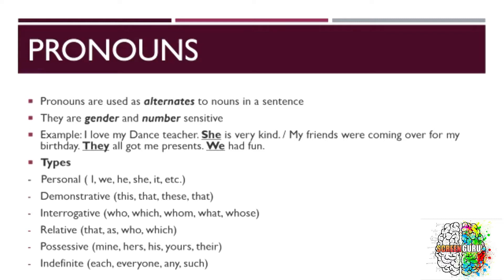Interrogative pronouns are those pronouns which are used to ask a question. They are also popularly known as the five W's. Relative pronouns are those pronouns which are used to start a relative clause so that we do not have to repeat the subject of the main clause. For example, 'this is the book which XYZ author wrote' or 'this is the friend who I was telling about the other day.'